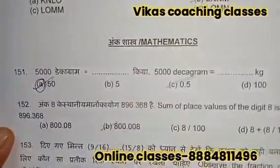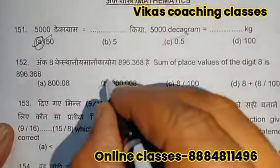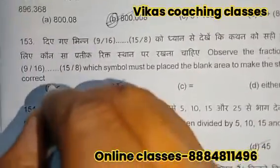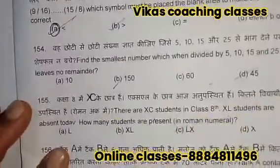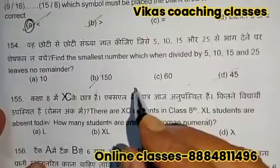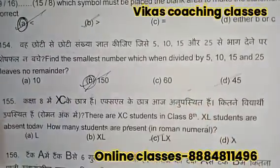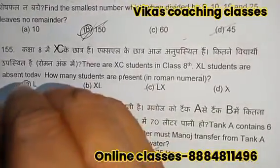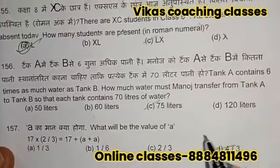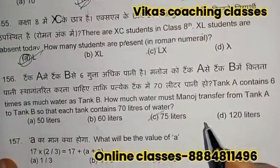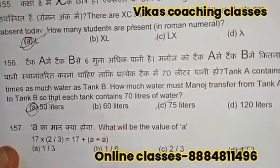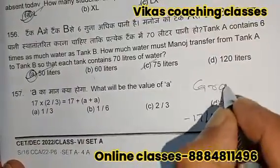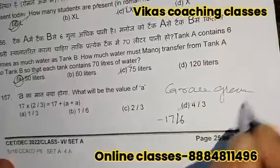Question 151 — option A is the correct answer. 152 — option B is the correct answer. 153 — option A is the correct answer. 154 — option B is the correct answer. 155 — option A is the correct answer. 156 — option A is the correct answer. For question 157, everyone will get grace marks.